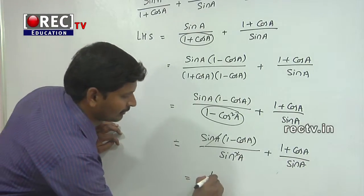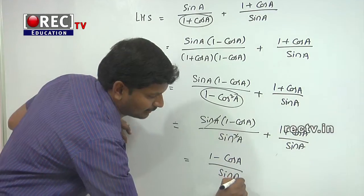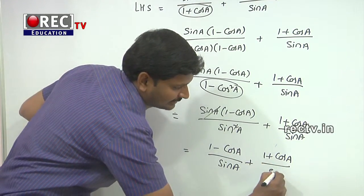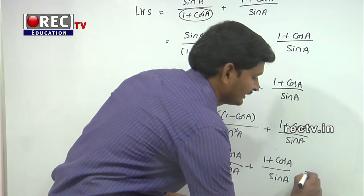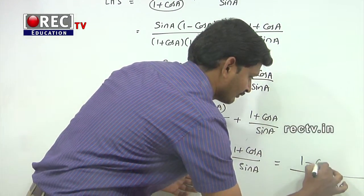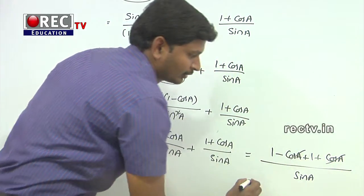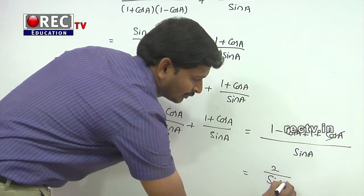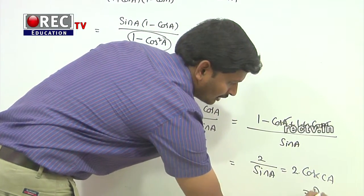We now have (1−cos(a))/sin(a) + (1+cos(a))/sin(a). Since both terms share the common denominator sin(a), we combine the numerators: (1−cos(a)) + (1+cos(a)) = 2, since the cosine terms cancel. This gives 2/sin(a), and since 1/sin(a) = cosecant(a), we get 2·cosecant(a), which equals the RHS. Hence proved.